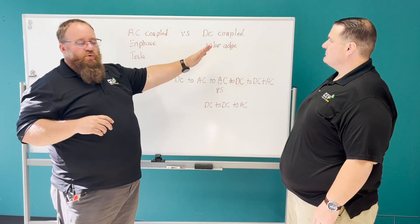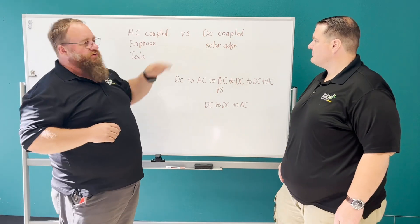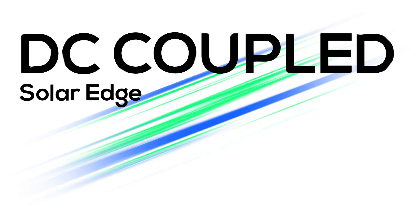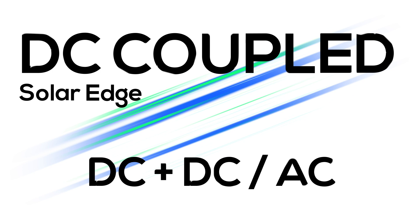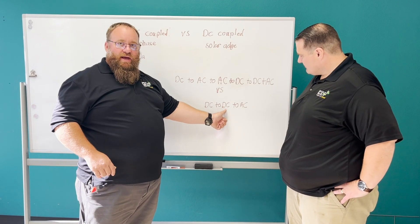We sell three batteries here: Enphase, Tesla, and SolarEdge. Our DC coupled system is going to be the SolarEdge. What that means is a DC coupled system is a DC panel that goes to a DC battery. So no conversion here, it goes directly off the roof straight into the battery.